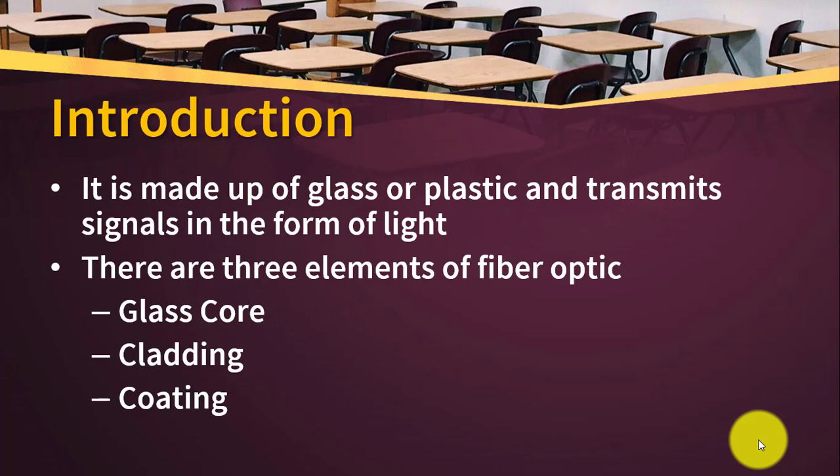What actually is an optical fiber, and how can you define it? Optical fiber is a wire that is made up of glass or plastic, and here the signals travel in the form of light. So if someone asks you what optical fiber is, you can simply say it is made up of glass or plastic and the signals travel in the form of light.